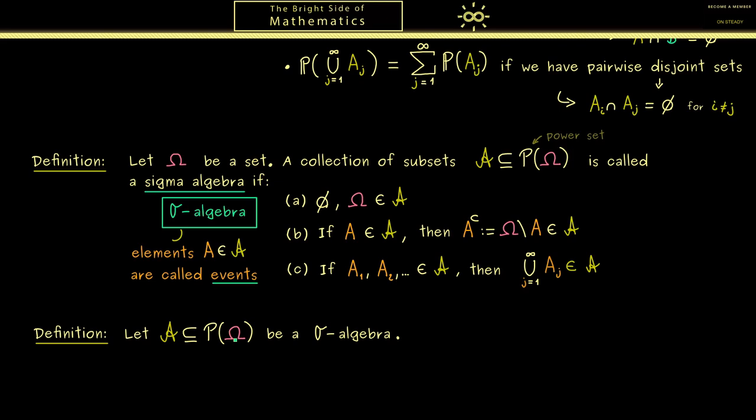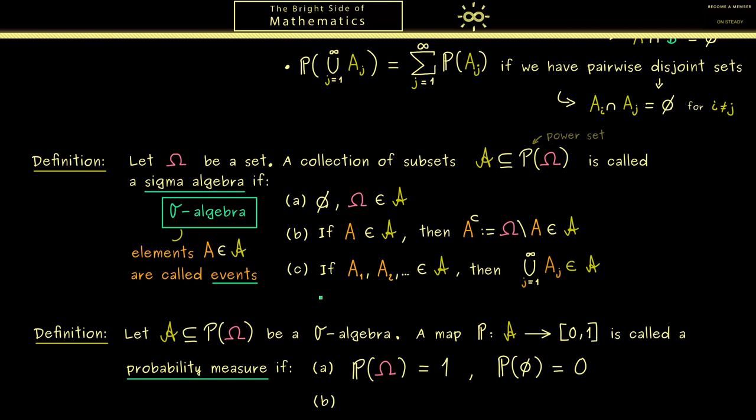Then a map we now call P with domain A and codomain the interval [0,1] is called a probability measure if it fulfills 2 properties. And because we have already discussed them above, we can just copy them now. The first one is simply that the probability of the whole space is 1 and the probability of the empty event is 0. And the second one is what we call sigma additivity. And please remember, for this sigma additivity we need pairwise disjoint sets. Okay, and with this you know the general notion of a probability measure, and of course we will use that a lot here.